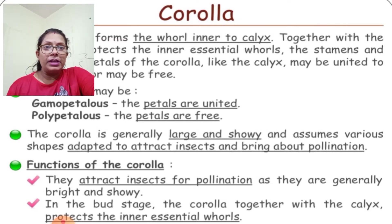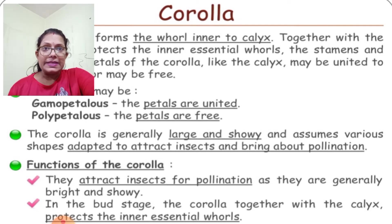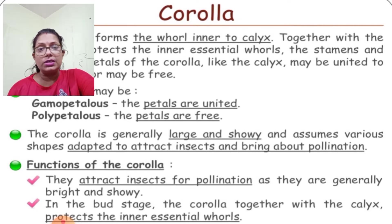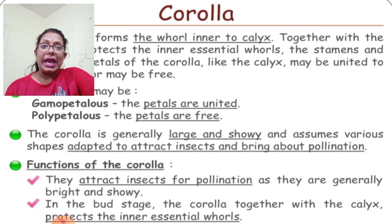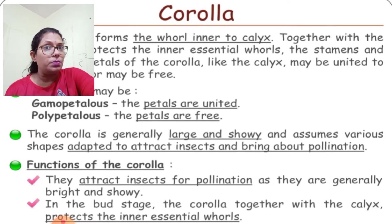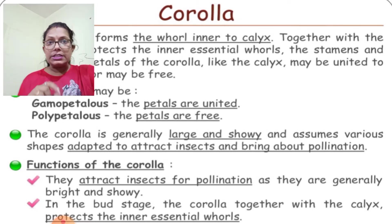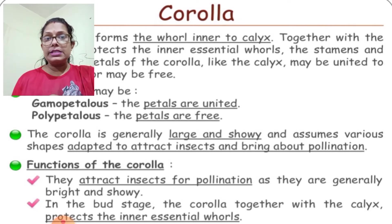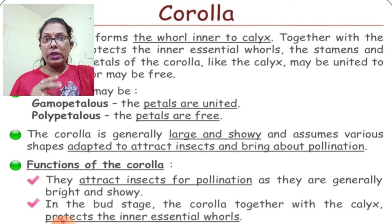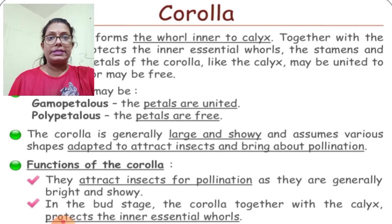The petals are very important for the process of reproduction. The function of the corolla is to attract insects or birds to bring about pollination. In the bud stage, the corolla together with the calyx protects the inner essential whorls — stamen and pistil.